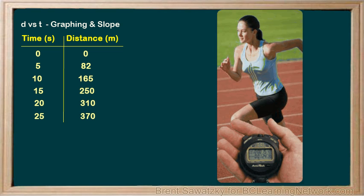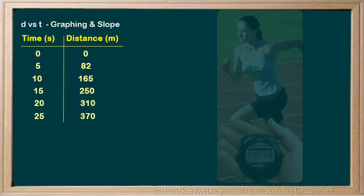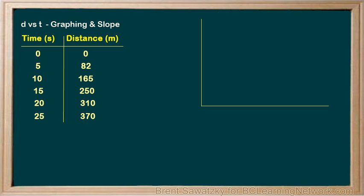Many times, a scientist will choose to graph the data on a D vs. T graph to more easily see any patterns.